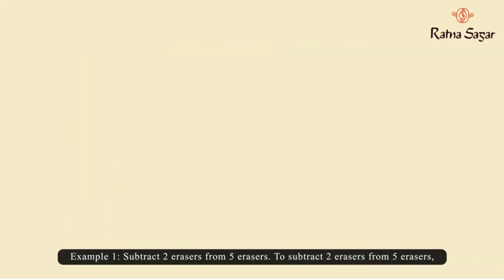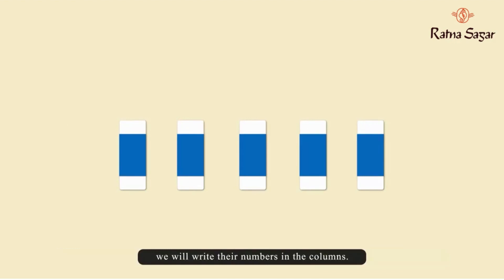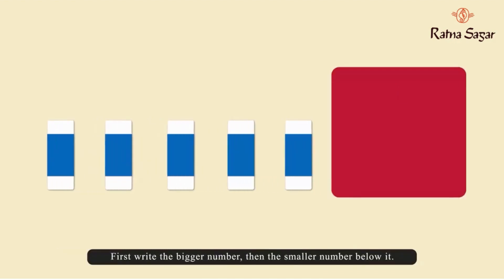Example 1. Subtract two erasers from five erasers. To subtract two erasers from five erasers, we will write their numbers in the columns. First, write the bigger number, then the smaller number below it.